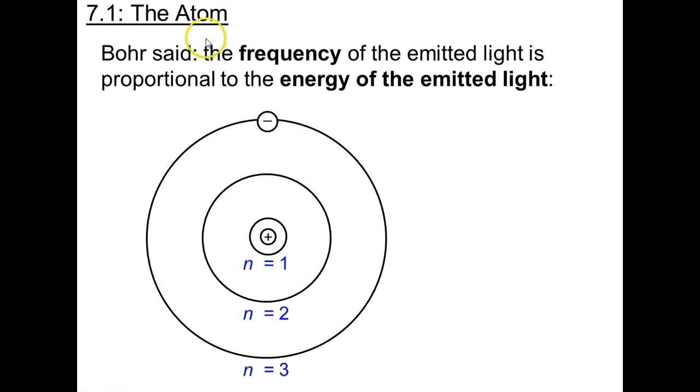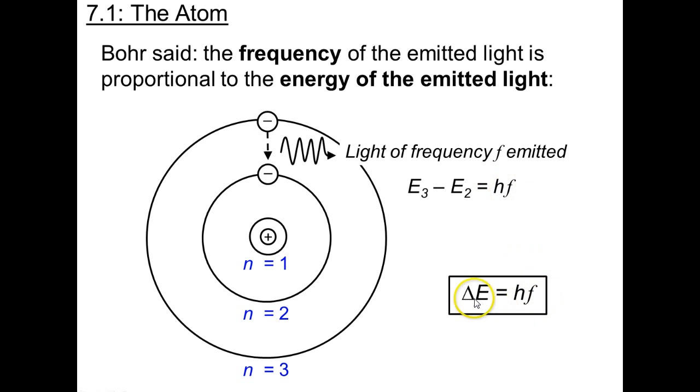Now, what Bohr said is he used an idea from Einstein. He said that the frequency of that light which is emitted is proportional to the energy of the emitted light. Like this. The electron falls down to this lower energy level. It's just lost some energy by definition of what these energy levels are. So it sends off light. Light is emitted. And that light has a frequency. And the change in energy between the two levels is equal to H times F. So what is H? Well, H is just the proportionality constant in this relationship. It's a universal constant that never changes. And it's called Planck's constant. So here's the value. There are the units. Incredibly small. But this is a very, very special equation.